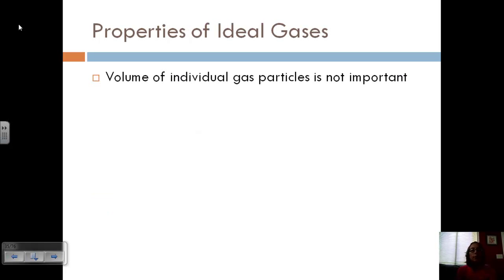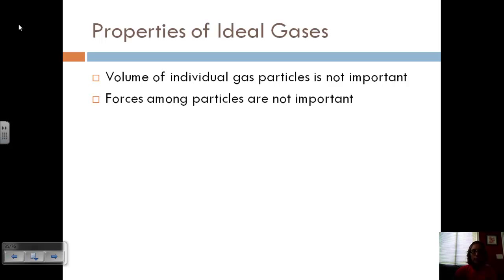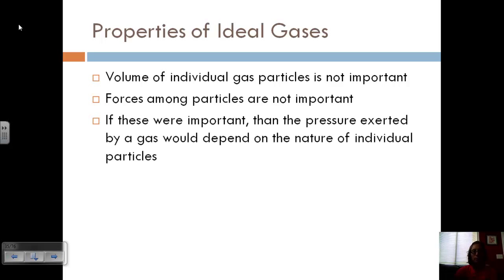Let's look at some other properties of ideal gases, since we're assuming each gas behaves ideally. The volume of individual gas particles is not important, and because the volume is not important, the forces among the particles are also not important. If these things were important, then the pressure exerted by the gas would depend on the nature of the individual particles rather than the quantity.